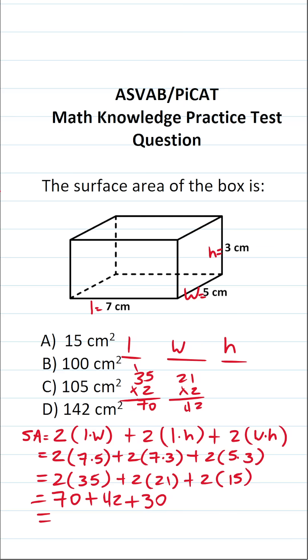So let's go ahead and work this out. On test day, I recommend you do this off to the side. We have 70, 42, and 30. We're going to be adding all that up. Zero plus two plus zero is two. Seven and three is 10 plus four is 14. So we can see that the surface area of this box, a rectangular prism, is going to be 142 square centimeters, which is answer choice D.